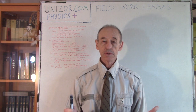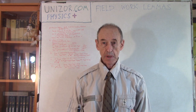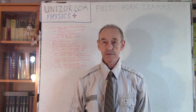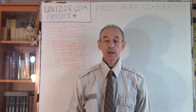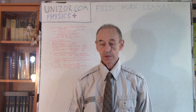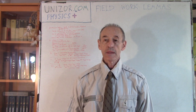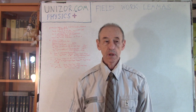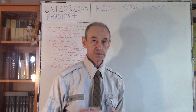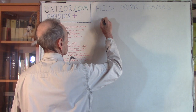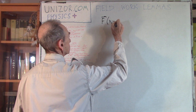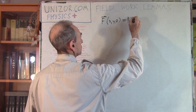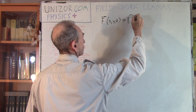We were talking about a field as a certain area in our three-dimensional space with Cartesian coordinates, where the field intensity force exists at every point. What was also introduced in the previous lecture is that this field might have a function called potential, which is related to the field intensity force.